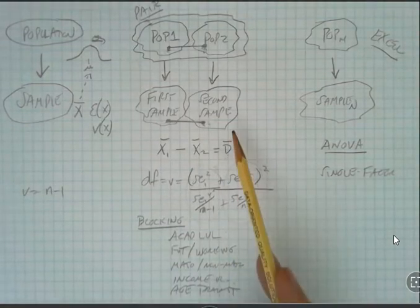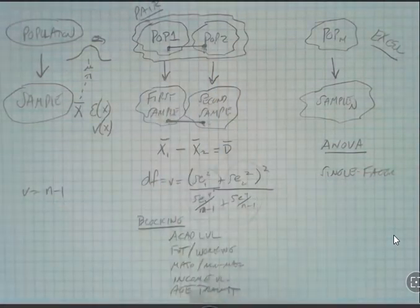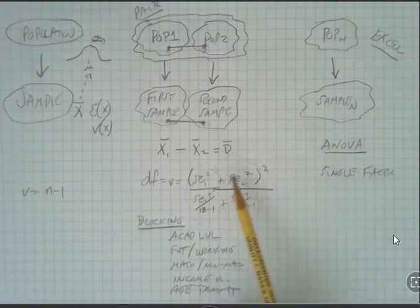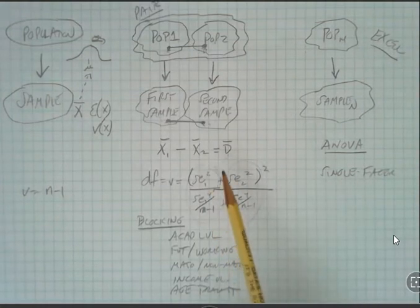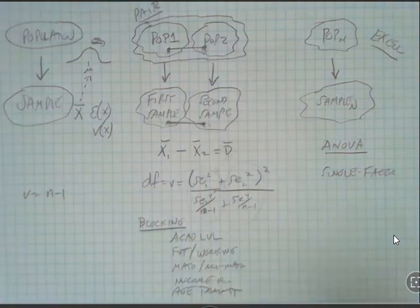The problem with a two-sample test with a single factor is we have to figure out what factor we're going to look at, maybe the difference between two classes, and then block out the other variables. I still have to do that in an ANOVA if I'm dealing with a single factor.